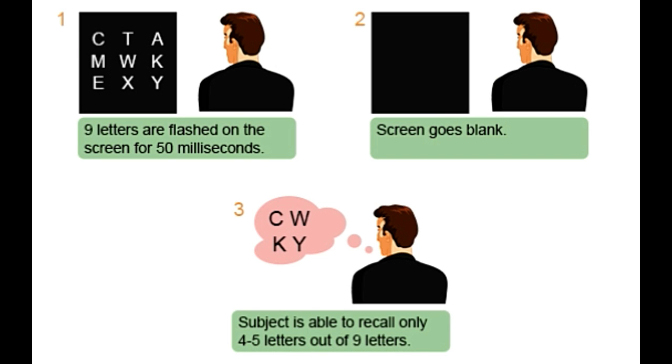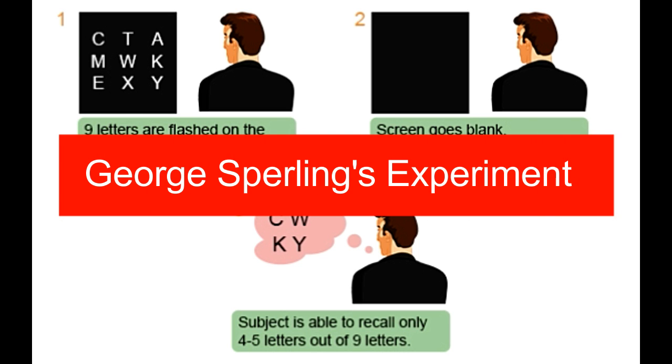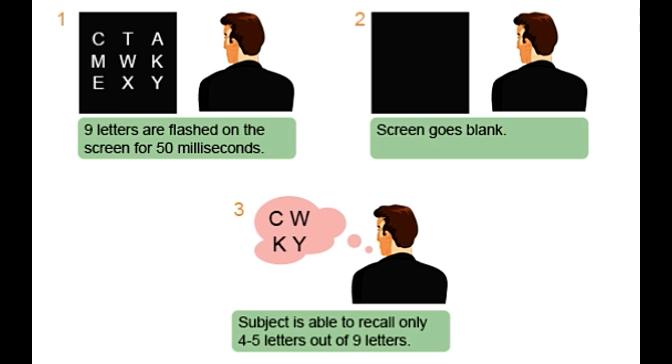It was in the 1960s that the existence of iconic memory was proven with the help of a series of experiments conducted by an American psychologist named George Sperling. In the experiment, the subjects were asked to recall a set of nine letters, three letters each in three rows. The letters were projected onto a screen for a brief period (1/20th of a second) with the help of a tachistoscope. It was observed that most participants were able to recall four or five letters. According to Sperling, the participants were unable to recall all the letters even when all of them had been registered, as the memory had faded too quickly.